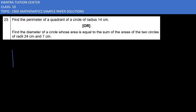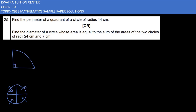We have a quadrant of a circle here. A quadrant is a part of a circle — if we take a circle and divide it into 4 parts, this will be the first quadrant, this the second, this the third, and this the fourth quadrant. So this quadrant is one quarter of a circle.